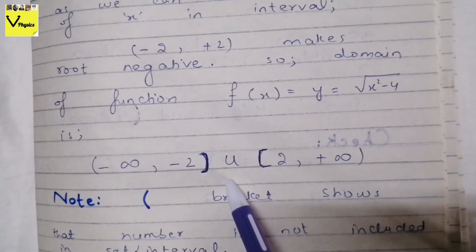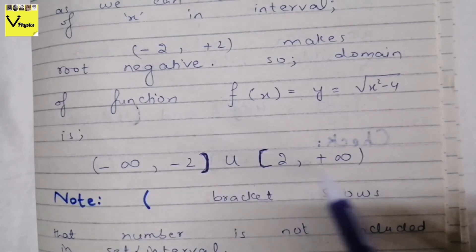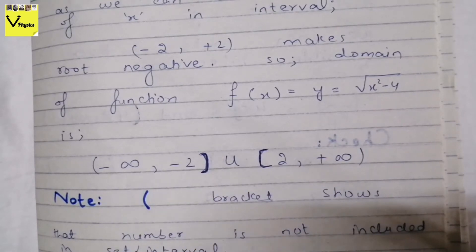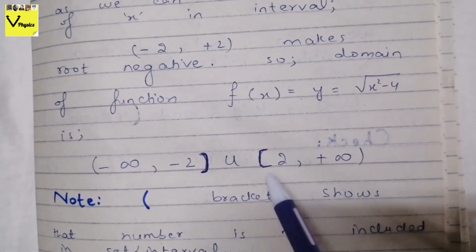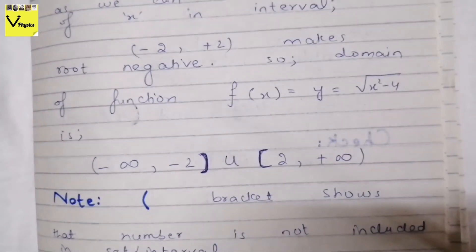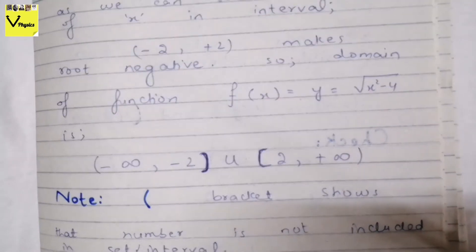We use union here because both intervals — (−∞, −2] and [2, +∞) — satisfy our conditions, but the interval from −2 to 2 makes the root complex. So the domain is (−∞, −2] ∪ [2, +∞).